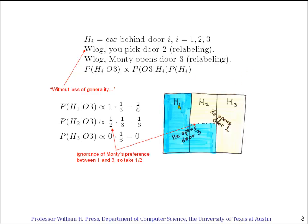The three hypotheses are H1, H2, and H3, and as I've drawn them here, they start off as equally probable. Now let's compute the three probabilities for H1, H2, H3 from the left-hand side of Bayes' rule. The probability of H1, given that Monty opens door 3 — that's the meaning of this cryptic O3.